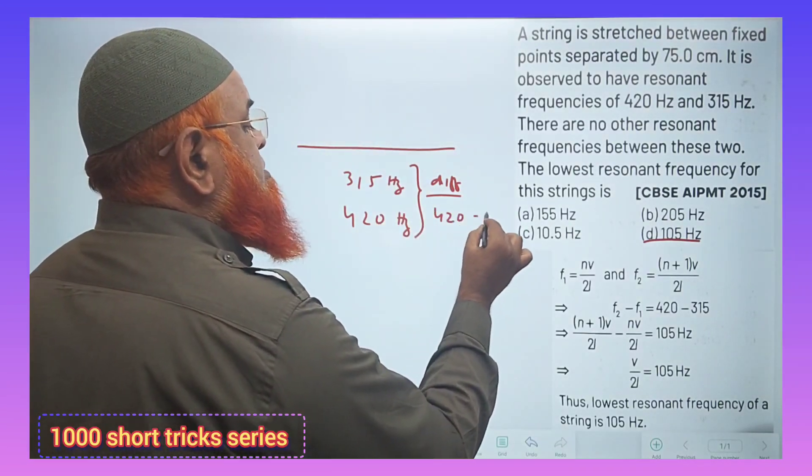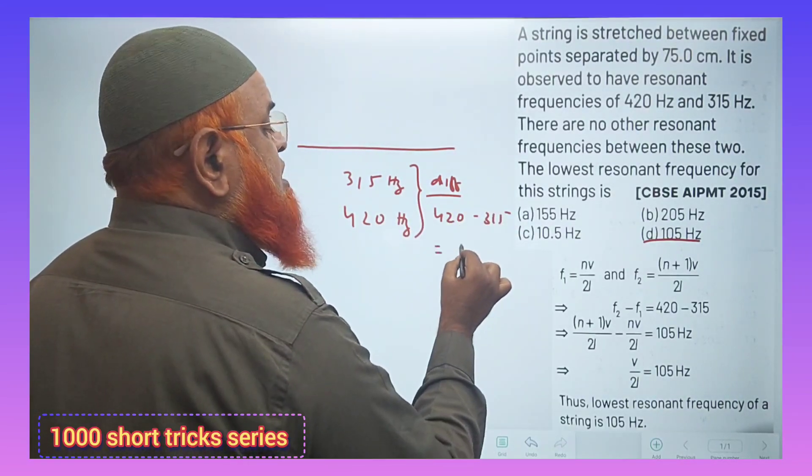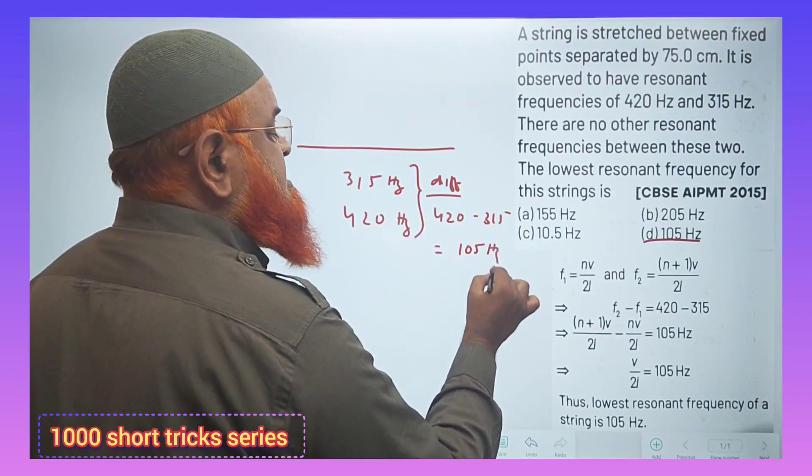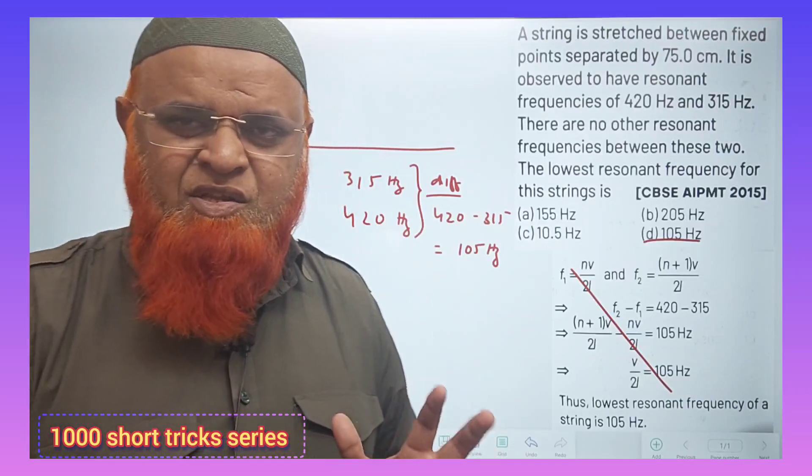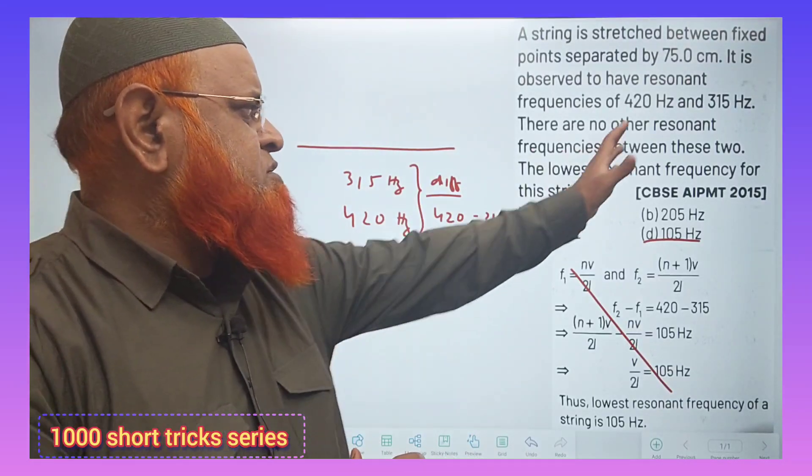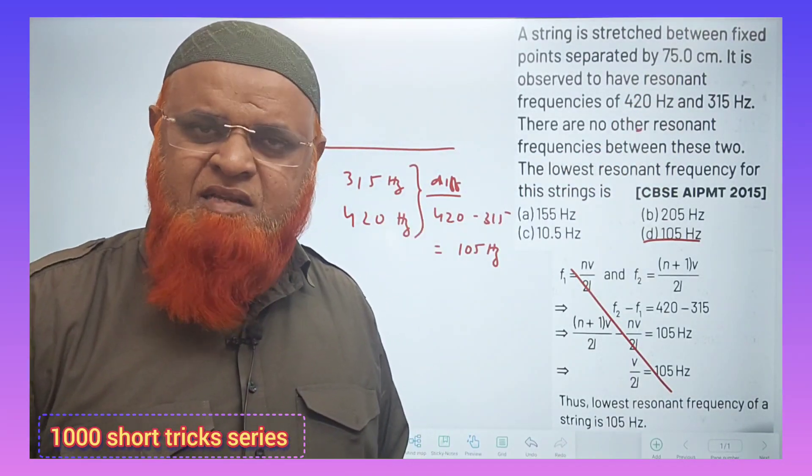So 420 minus 315 is already giving you 105 Hz. You don't need to do all this stuff. It's a waste of time. Why should we do all these? Let us just make the difference and get the answer.